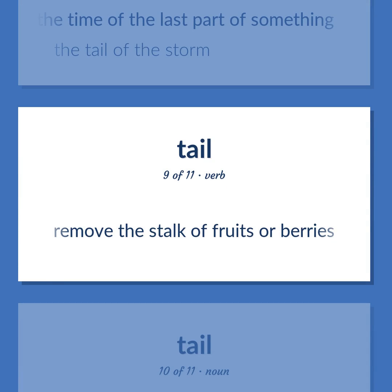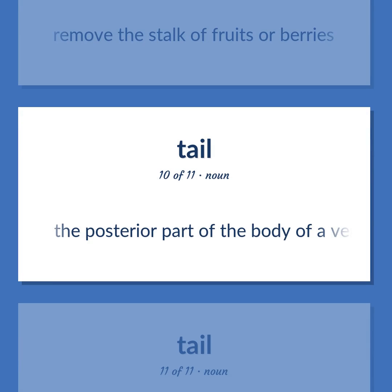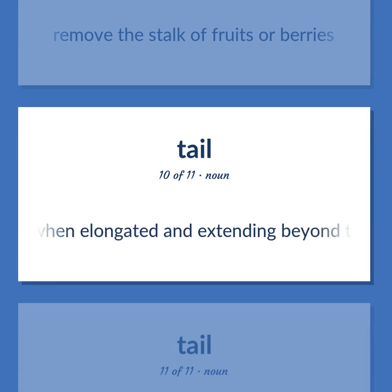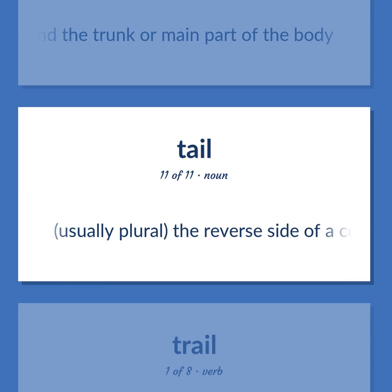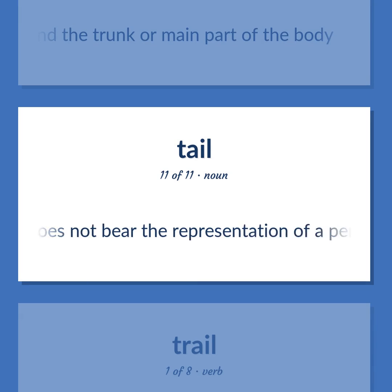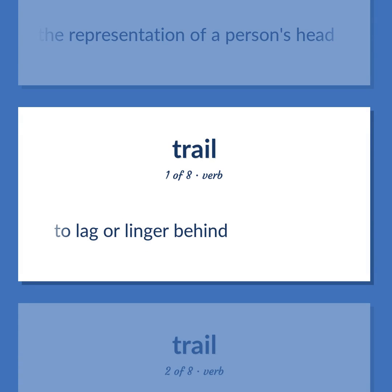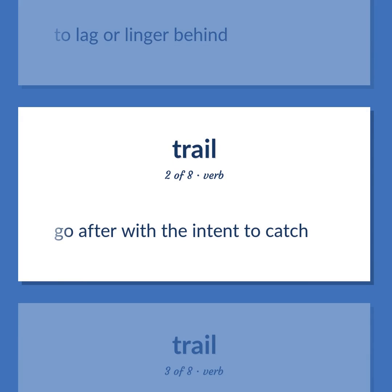Tail (verb): Remove the stalk of fruits or berries. The posterior part of the body of a vertebrate, especially when elongated and extending beyond the trunk or main part of the body. Usually plural: the reverse side of a coin that does not bear the representation of a person's head. To lag or linger behind. Go after with the intent to catch.